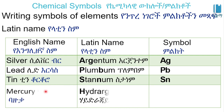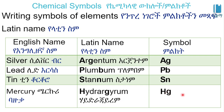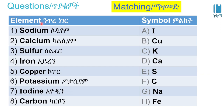Mercury — the Latin name is 'hydrargyrum.' So the symbol Hg comes from hydrargyrum. Hg is used to represent mercury because its symbol is derived from the Latin name, not the English name.